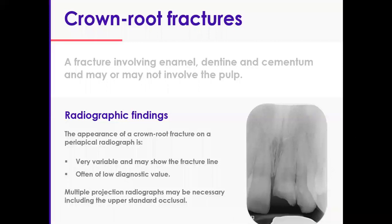Radiographic examination findings also depend on the extent of the injury. You may see the fracture line or not, but overall they are low in diagnostic value. Do not let the most severe injury draw your attention to a diagnosis for that particular tooth and cause you to forget everything else. Check all the teeth and carry out your systematic examination. Take parallax radiographs and also an occlusal to check soft tissue issues as well, especially if the coronal fragment is lost.